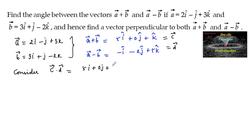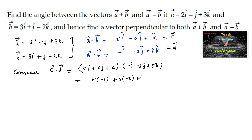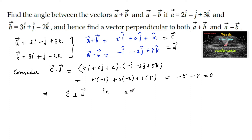c dot d equals (5i plus 0j plus k) dot (minus i minus 2j plus 5k), which is equal to 5 times minus 1, plus 0 times minus 2, plus 1 times 5, which equals minus 5 plus 5, equal to 0. Since the dot product is 0, we can say that vector c is perpendicular to vector d, that is vector a plus b is perpendicular to vector a minus b.